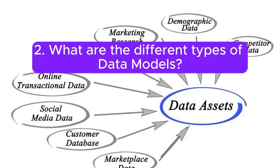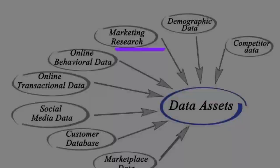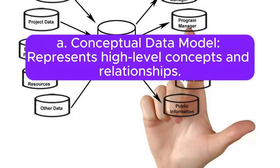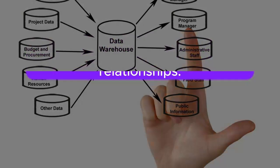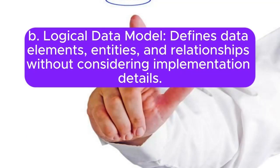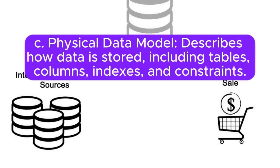2. What are the different types of data models? Answer: A. Conceptual data model represents high-level concepts and relationships. B. Logical data model defines data elements, entities, and relationships without considering implementation details. C. Physical data model describes how data is stored, including tables, columns, indexes, and constraints.